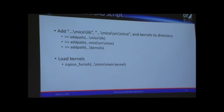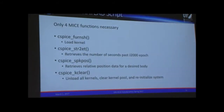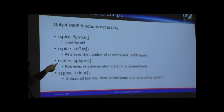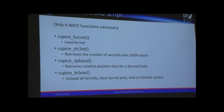Luckily we're only going to be playing with about four of these functions really. We do all that hard setup just to get a good understanding of where planets are. That understanding comes from cspice_spkpos, which retrieves the relative position data for whatever body you're interested in — Mars, Jupiter, an asteroid. Then we use cspice_str2et, which gives you an output in seconds — the number of seconds past the J2000 epoch.